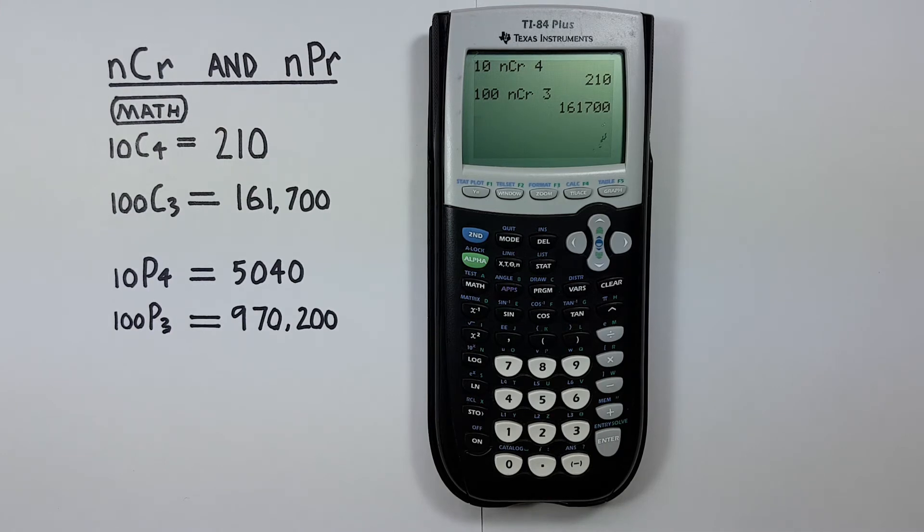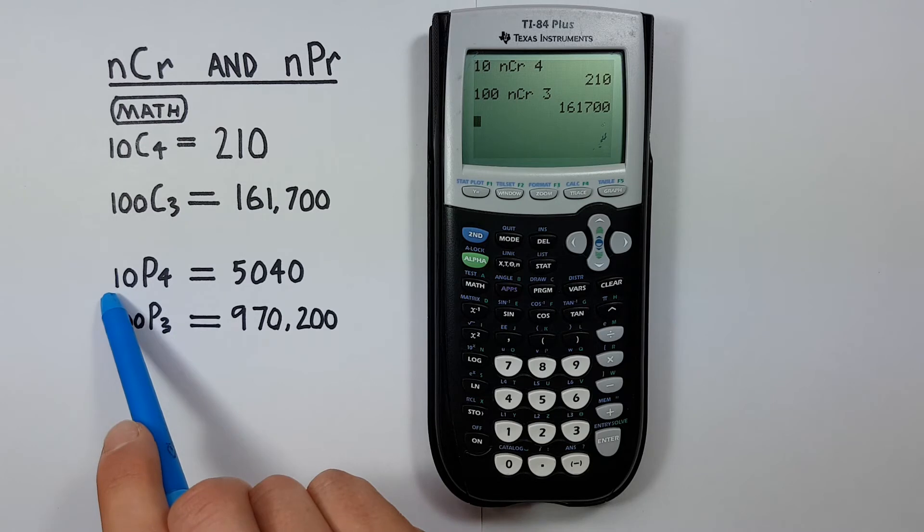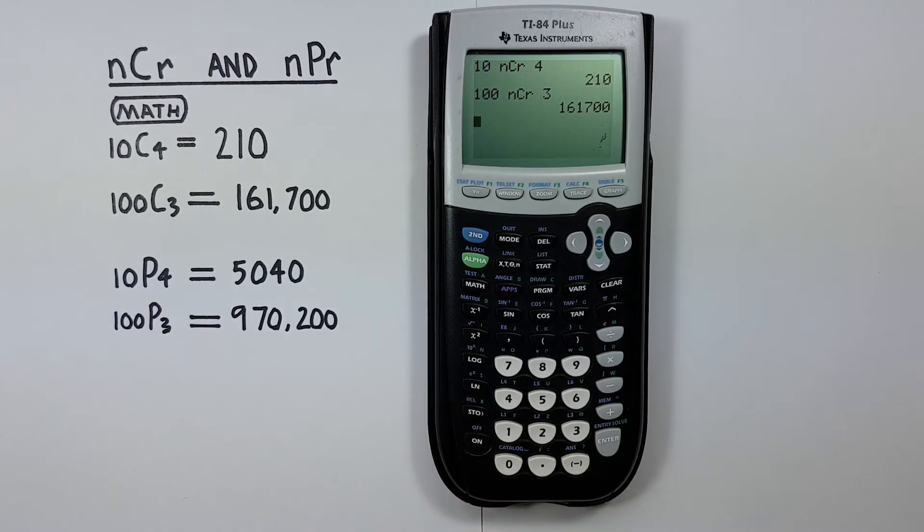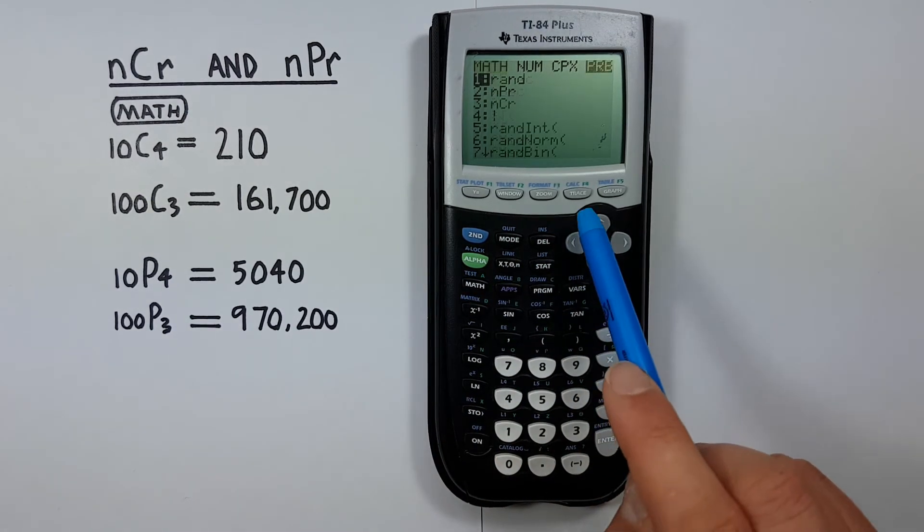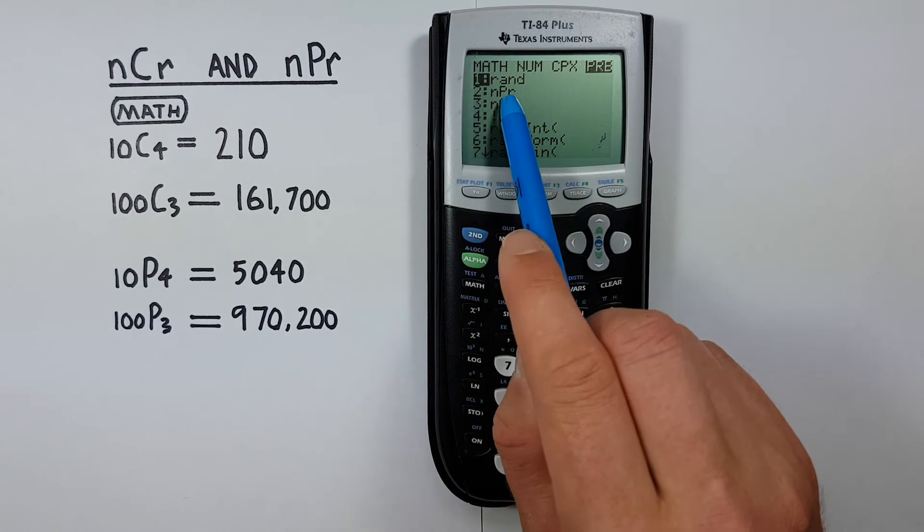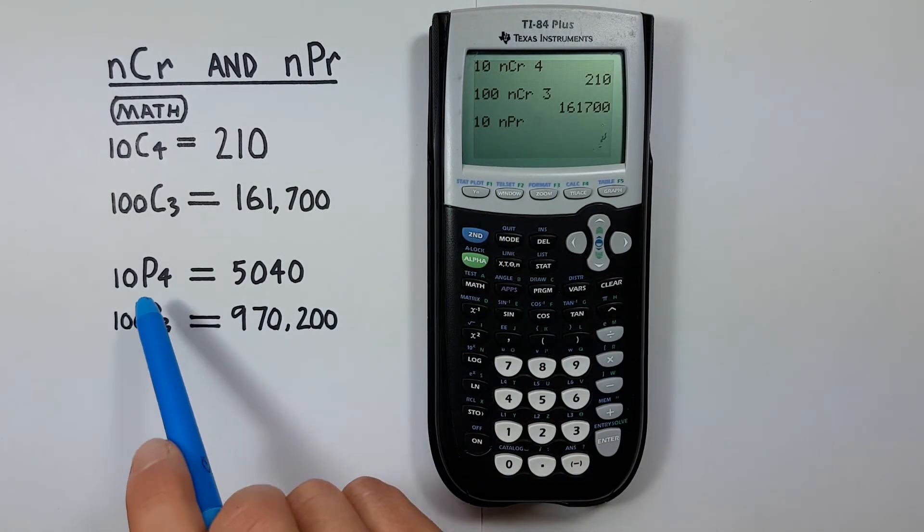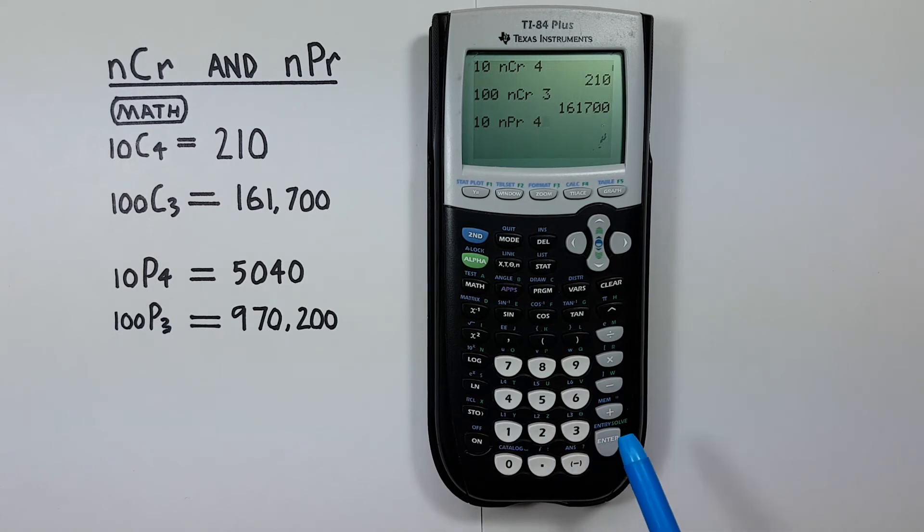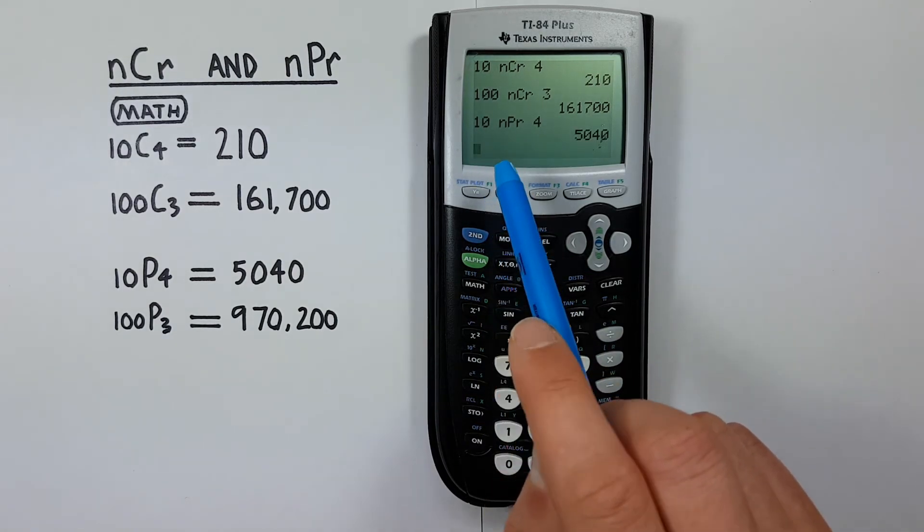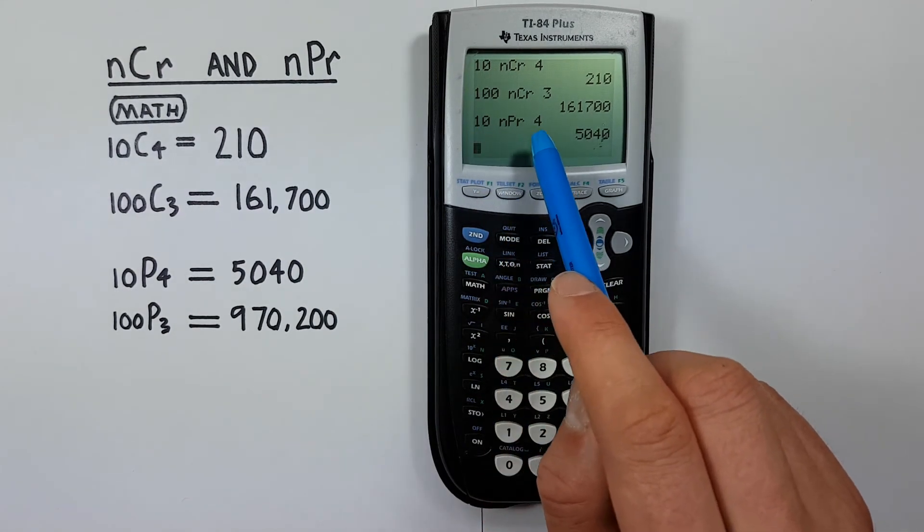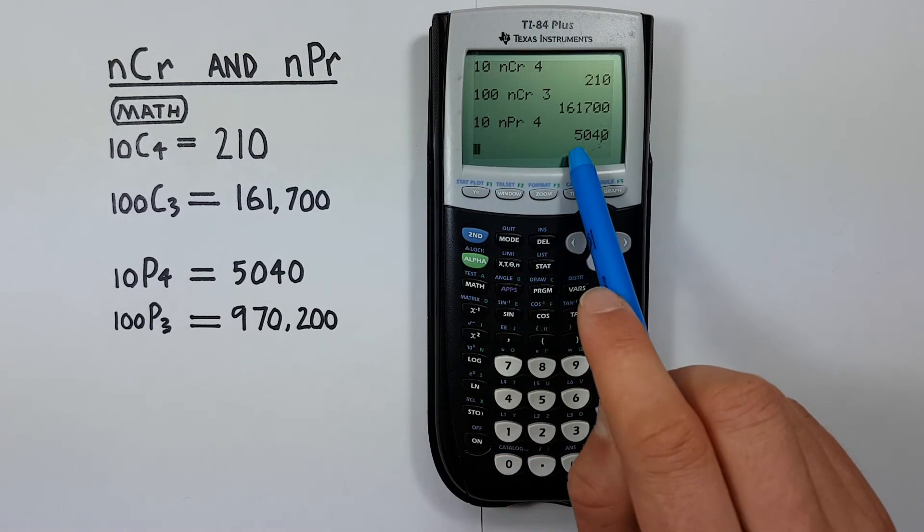The same thing works with permutations. Let's say we have ten choose four permutations. First we enter the ten, then the math. Since permutations is number two we can just hit two. Four and enter. We see with ten choose four permutations we get a result of 5,040.